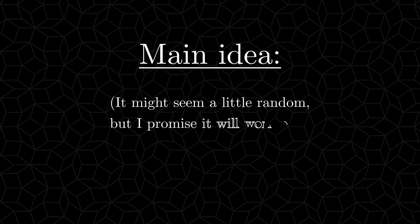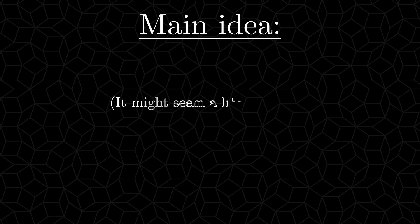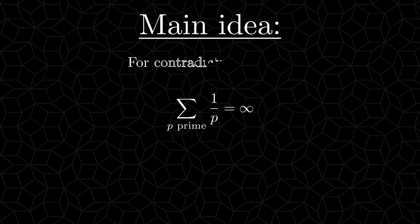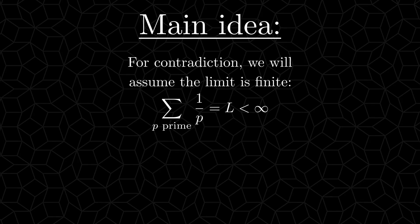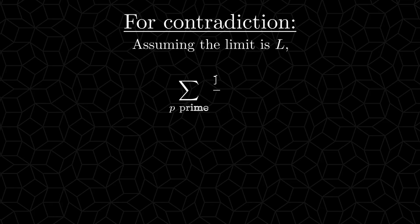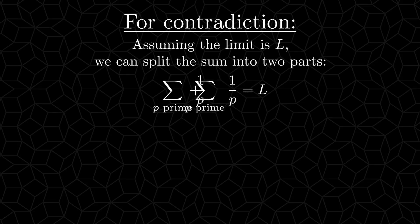The main idea of this proof is as follows. We want to prove that the sum of the reciprocal of all the primes is infinite, and we will do so by contradiction. So we will assume the limit is finite. And with that assumption, we're going to conclude that some set of natural numbers, up to and including n, has fewer than n elements. And if that is not a contradiction, then I don't know what is. So if we assume the limit is finite, and that this finite sum is L, then we can split the sum into two parts.